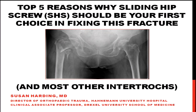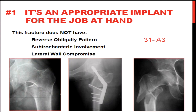I would add most other intratrochanteric fractures as well. Number one, it's an appropriate implant for the job at hand. This particular fracture does not have a reverse obliquity pattern. It does not have subtrochanteric involvement. It does not have compromise of its lateral wall. Those are the three danger signs that perhaps would lead you to choose an intramedullary device. Those particular fracture patterns all fall into the OTA 31A3 subset.